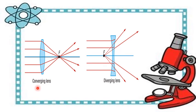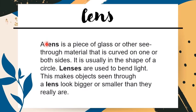Here is the conclusion on lenses. A lens is a piece of glass or other see-through material that is curved on one or both sides, and is usually in the shape of a circle. Lenses are used to bend light. This makes objects seen through a lens look bigger or smaller than they really are.